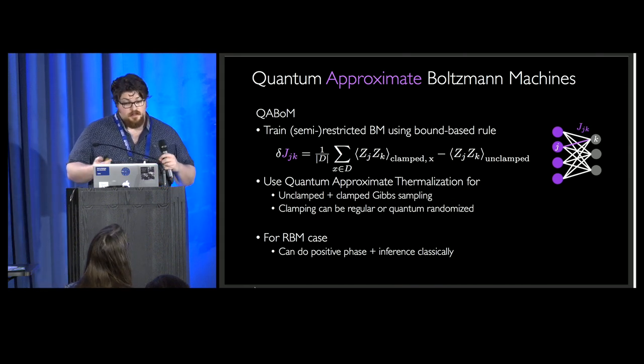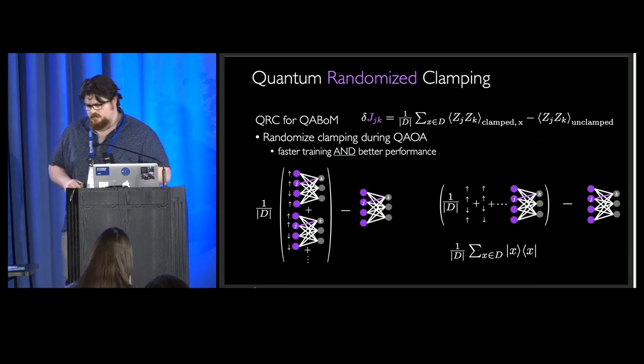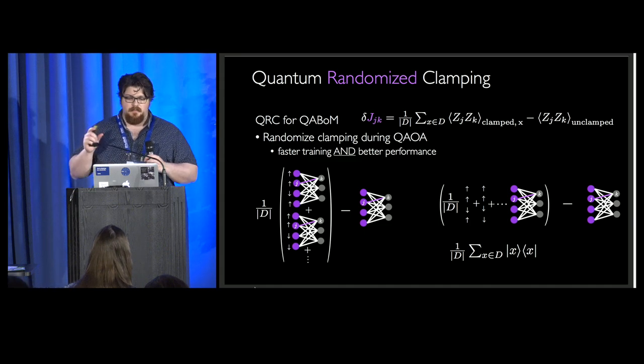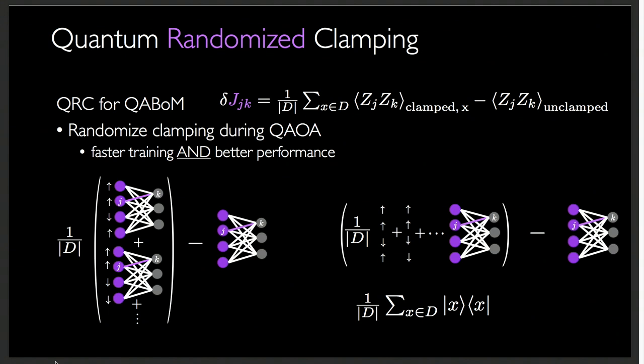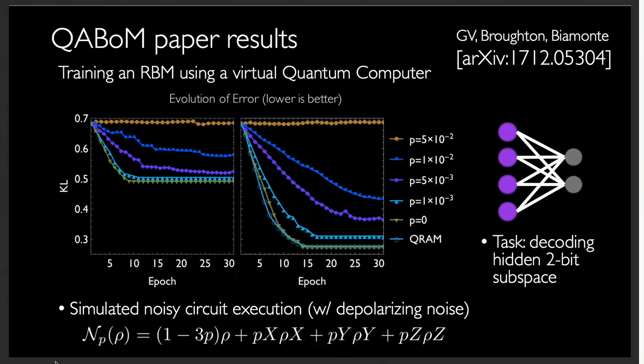So the quantum approximate Boltzmann machine is leveraging this quantum approximate thermalization to train, to do the sampling, to train Boltzmann machines. Simple enough. A little trick we came up with, which is really weird, is you could clamp to a mixture of different states because every run of the QAOA, you could randomize which data point you input in the visibles. This not only is much faster because you only have one run of QAOA to do for all data points, but it actually gives much better performance. So this is what happened when we simulated the algorithm on a simulated noisy circuit model quantum computer with depolarizing noise. The task was to decode a two-bit hidden subspace. As we could see, for various levels of noise, it still performs well. The KL divergence minimizes. On the right is the quantum randomized version, and on the left is the non-quantum randomized version.